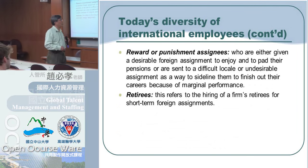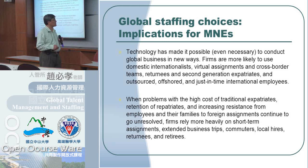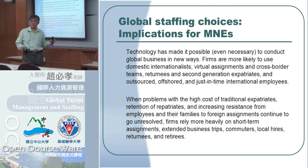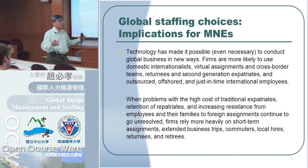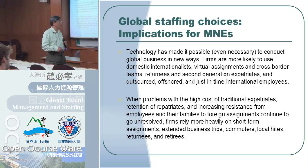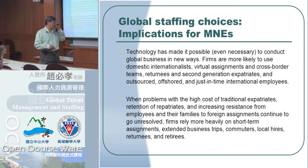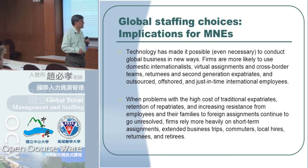Technology has made it possible to conduct global business in new ways. Firms are more likely to use domestic international assignees, virtual assignments, and cross-border teams — as well as returning and second-generation expatriates, outsourced, offshore, and just-in-time international employees — because long-term expatriation costs more. All these alternatives become more available when problems with the high cost of traditional expatriate retention, increasing resistance from employees and their families to foreign assignments, continue to go unresolved. So firms rely more heavily on short assignments, extended business trips, commuter arrangements, local hires, and retirees.